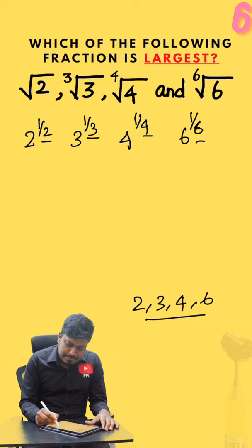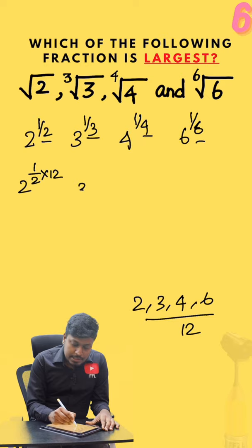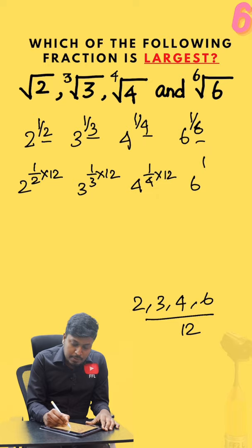So multiply by 12 here. 2 power 1 by 2 into 12, 3 power 1 by 3 into 12, 4 power 1 by 4 into 12, and 6 power 1 by 6 into 12.